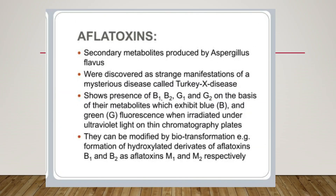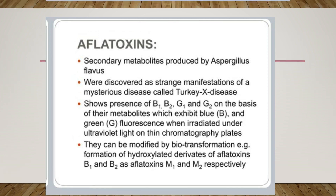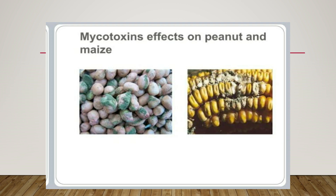First, aflatoxins: these are secondary metabolites produced by Aspergillus flavus. They were discovered as strange manifestations of a mysterious disease called Turkey X disease. They show the presence of B1, B2, G1, and G2 based on their metabolites — B means blue and G means green fluorescence when irradiated under ultraviolet light on thin chromatography plates. They can be modified by transformation, for example the formation of hydroxylated derivatives of aflatoxins B1 and B2 as aflatoxins M1 and M2 respectively. Mycotoxins also have an effect on peanut and maize.